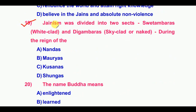Nineteenth question: Jainism was divided into two sects — Shvetambaras and Digambaras — during the reign of the Mauryas.